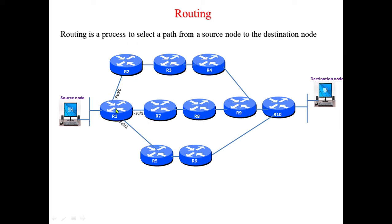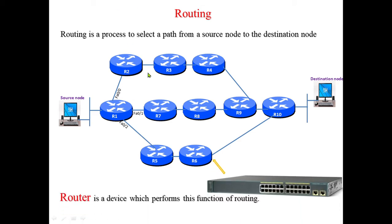Routing is a process by which routers find the suitable path or the best path among multiple available paths. A node can be connected to another node by multiple paths, and the job of routing is to find out a path and select one of them on the basis of some criteria. The router is the device which actually performs this routing job.